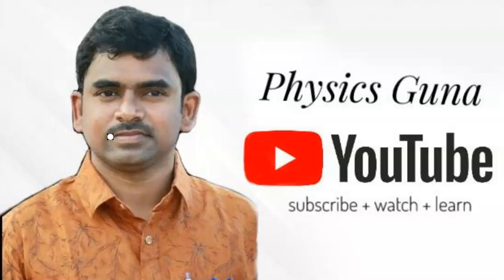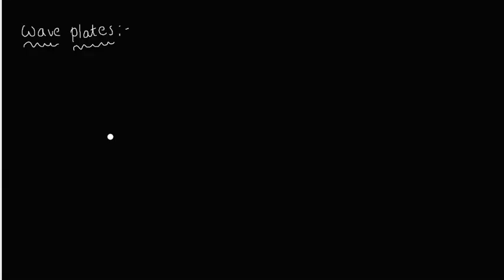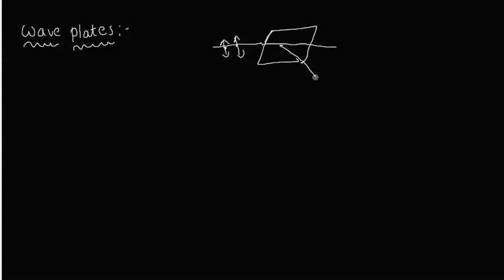Hello students. In our previous class, we discussed double refraction. Double refraction means when unpolarized light passes through an anisotropic crystal, it splits into two rays. One ray is called the ordinary ray and the other is called the extraordinary ray.